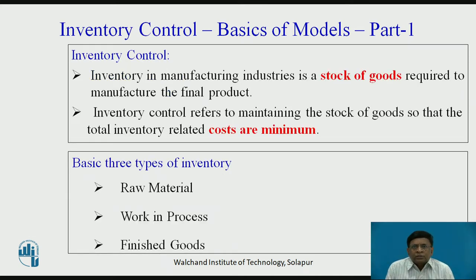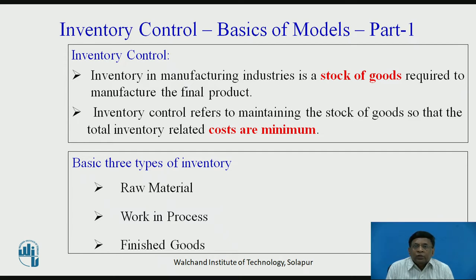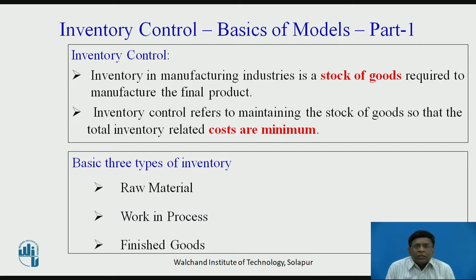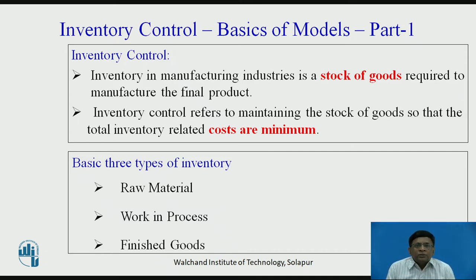These things were discussed in an earlier video; we will briefly revise them. What is inventory? Inventory is basically the stock of goods required in manufacturing the final product of any manufacturing industry. We are only considering inventory items which go into manufacturing the product, and not items like stationery, furniture, etc. Inventory control refers to optimizing the levels of all these inventory items so that inventory-related costs will be kept to a minimum level. There are basically three types of inventories: raw material, work in process, and finished goods.